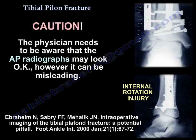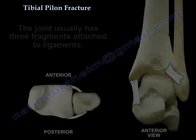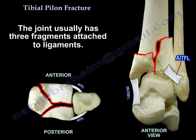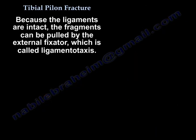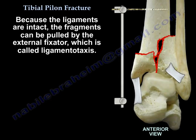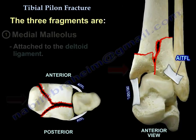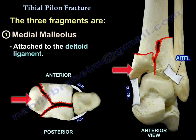The physician should be aware that the AP radiograph may look okay but can be misleading. The joint usually has three fragments attached to ligaments. Because the ligaments are intact, the fragments can be pulled by the external fixator — this is called ligamentotaxis. The first fragment is the medial malleolus, which is attached to the deltoid ligament.